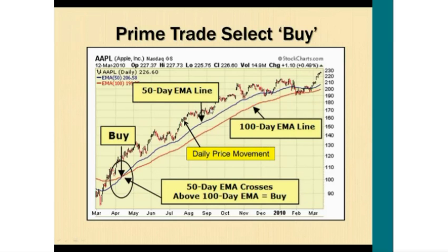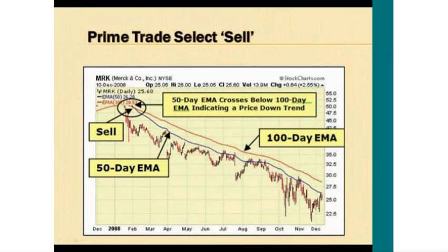We can get an instant picture of whether we should be buying or selling a stock just by looking at the 50-day EMA in relation to the 100-day EMA. Here's an example of a sell signal for Merck stock — the 50-day EMA crossed below the 100-day EMA, so Merck was on a sell signal. At this point you don't know how long or sustained the downtrend will be, so you want to consider exiting your long positions because you don't know how extensive the decline is going to be or how long it will last.